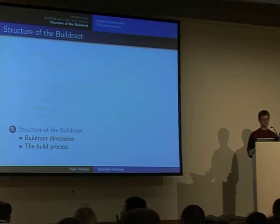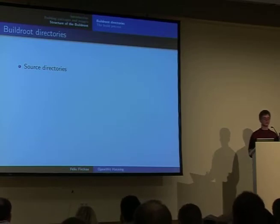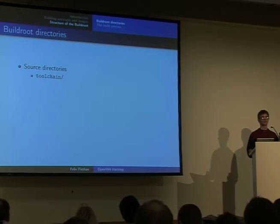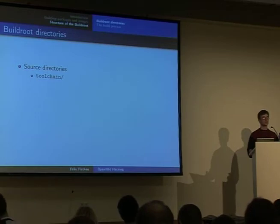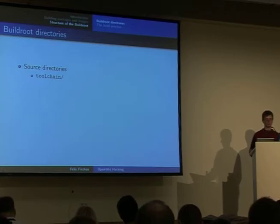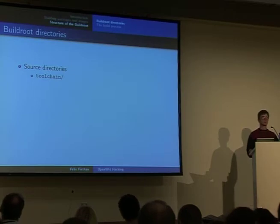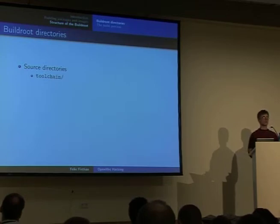If you just want to port it to another platform, you need to know some basics about the structure. There are several source directories which we use. The first one is toolchain — you usually don't need to change anything in there. It contains all the build instructions to fetch the kernel headers, the binutils, the C library, and of course the compiler itself, and additionally also the debugger.